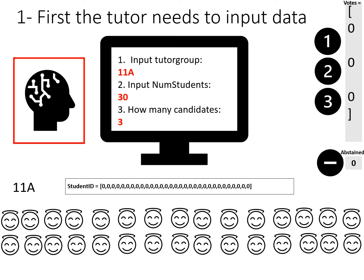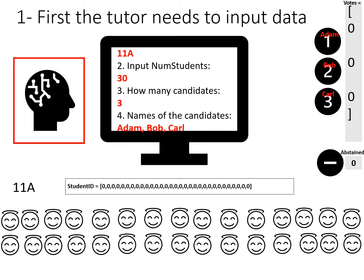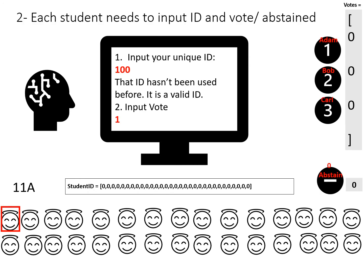We also have a variable called abstained, which holds how many students have abstained from voting. We ask the tutor for the names of the candidates, and we have an array called names candidates storing the three names — Adam, Bob, and Carl. Now we've finished with the tutor input.